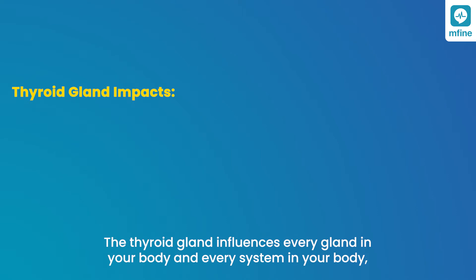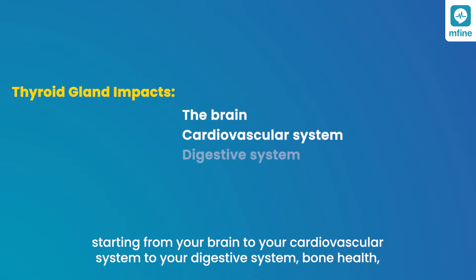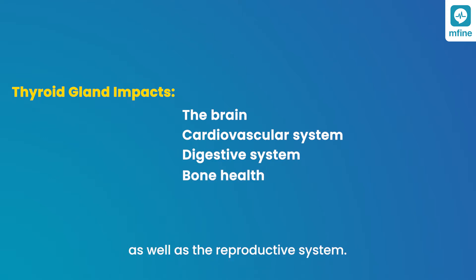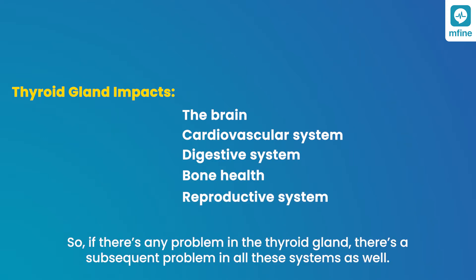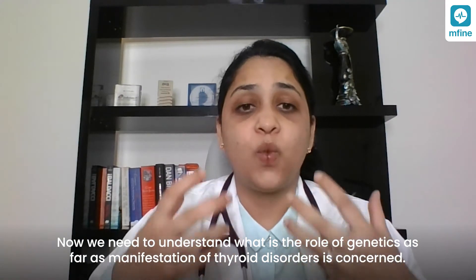The thyroid gland influences every system in your body — starting from your brain to your cardiovascular system, digestive system, bone health, as well as the reproductive system. So if there is any problem in the thyroid gland, it affects all of these systems.